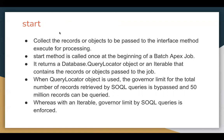The start method collects the records or objects to be passed to the execute method for processing. It is called once at the beginning of a Batch Apex job. It returns either a Database.QueryLocator object or an Iterable containing the records on which processing will be applied. When a QueryLocator object is used, the governor limit for the total number of records retrieved by SOQL queries is bypassed, and up to 50 million records can be queried.